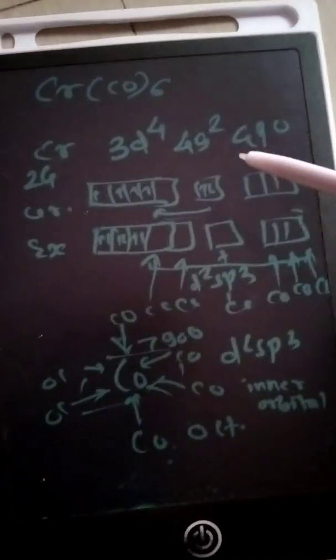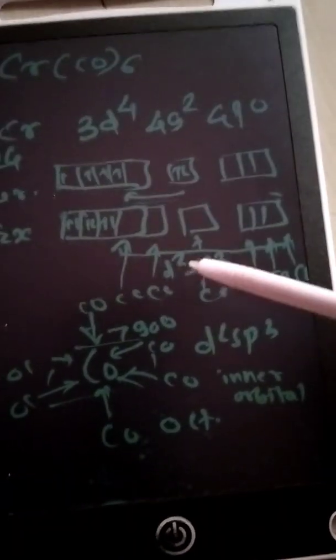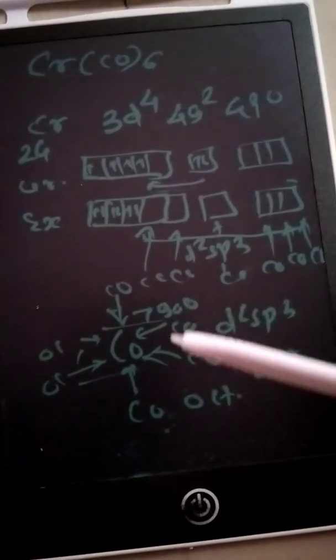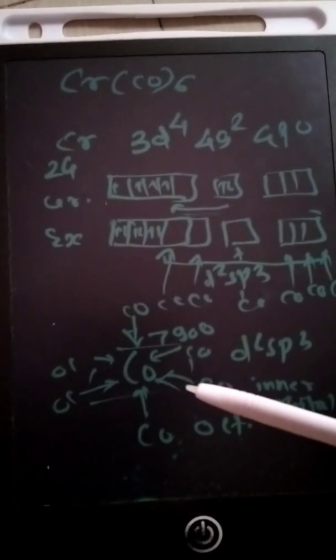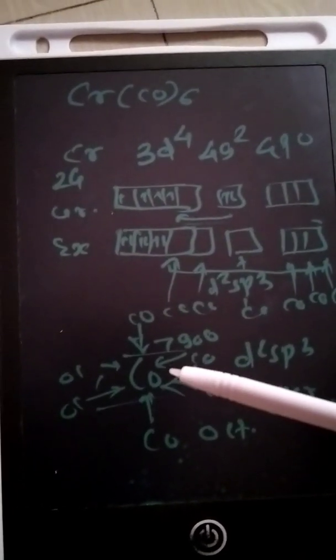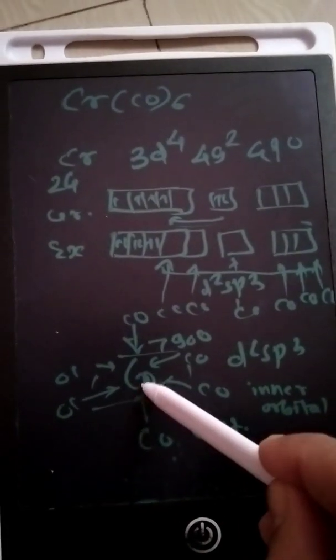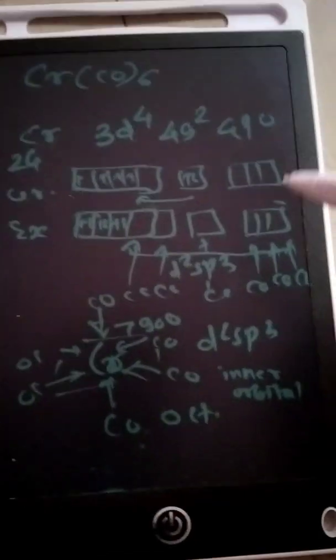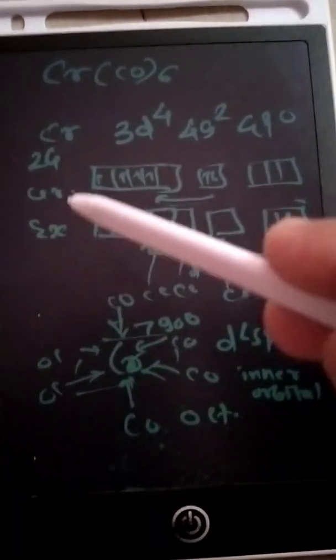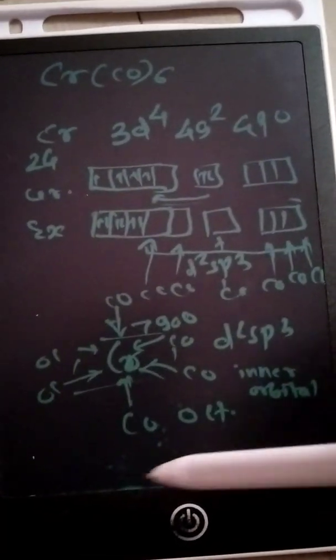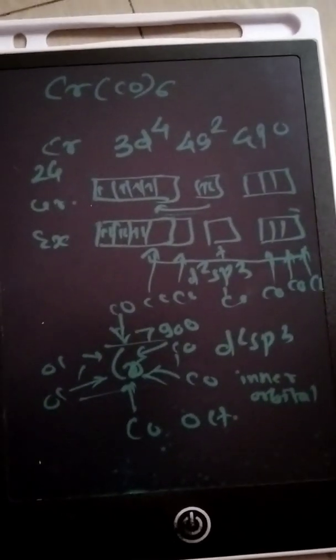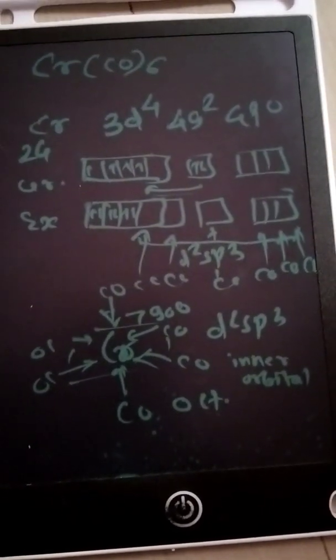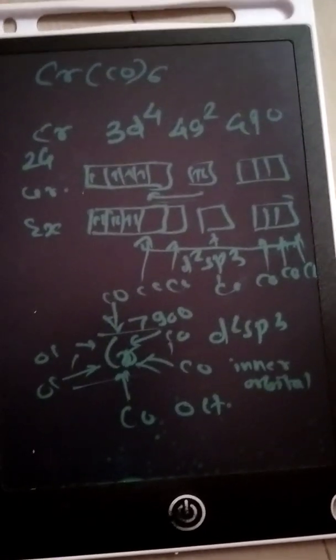Using valence bond theory, we can predict the hybridization, the structure, bond angles, and all the bonds are the d-pi-p-pi bond between CO and Cr, chromium and carbonyl ligands. So in this way, valence bond theory explains the hybridizations of the metal carbonyl compounds which are organometallic catalytic active compounds.